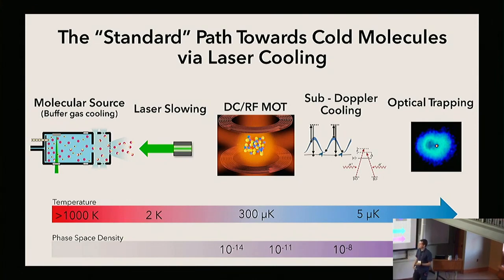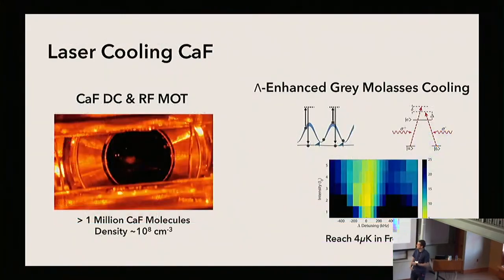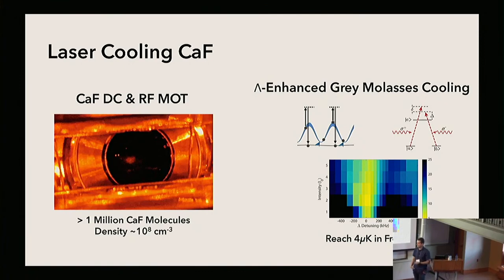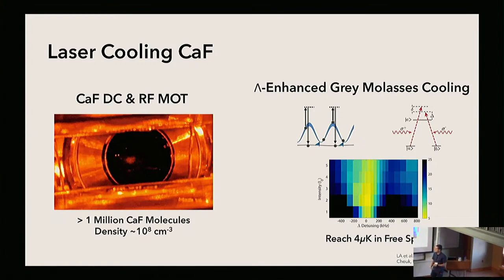Just as a brief recap of how our MOTs look: we can make both DC and RF MOTs of these calcium fluoride molecules. The initial iteration had about 10^5 molecules, and our upgraded version now has about a million trapped molecules. Within this upgraded new apparatus, we also get densities of about 10^8 or so in this tightly compressed MOT.